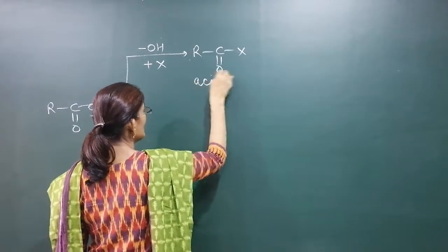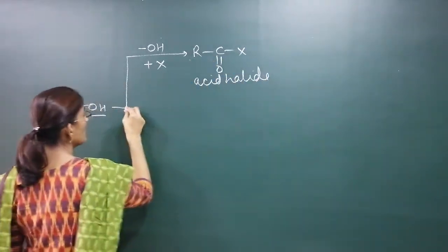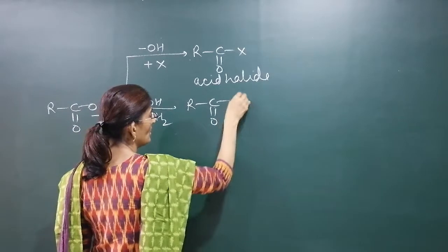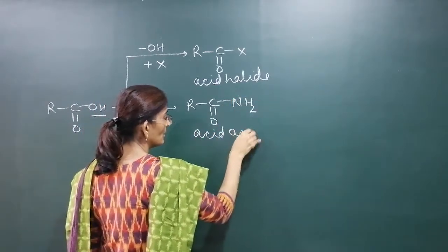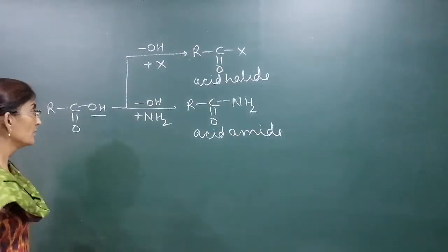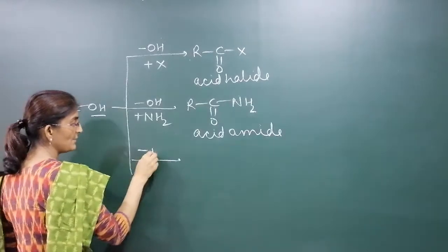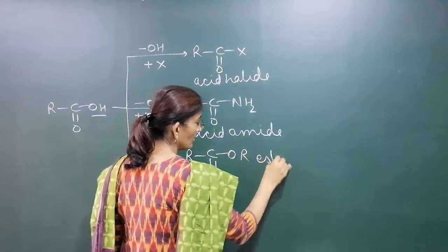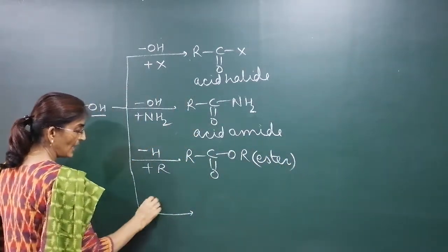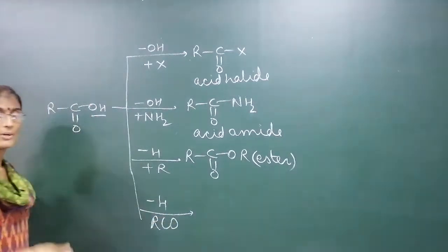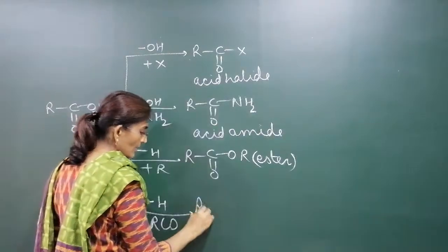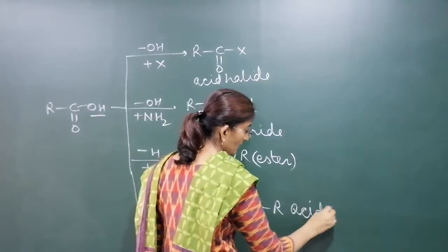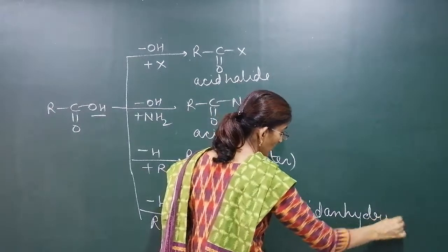The second derivative: if the –OH group is replaced by –NH₂ (amine group), we get C=O–NH₂, which is called an acid amide. Third: when the H of the hydroxyl group is replaced by an alkyl or aryl group, we have an ester. And lastly, when hydrogen is replaced by an acyl group — R–C=O, known as the acyl group — we have an acid anhydride.